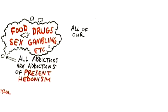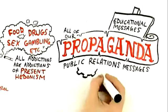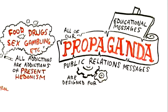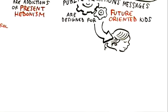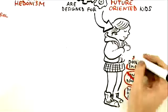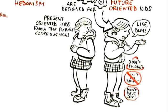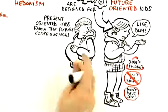All of our propaganda, all of our educational messages, all our public relations messages are designed for future-oriented kids, who's not the problem. They tell you, here's the negative consequences of doing what you're doing. Future-oriented kids know that, and they don't do it. Present-oriented kids know the future consequences.